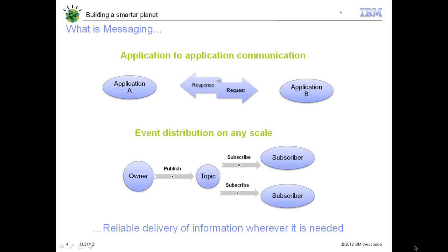We have two programming models in messaging. One is point-to-point, which is a typical example of application-to-application communication via a messaging queue. There is a one-to-one relation between these applications where the sending and receiving application ensures that the message is delivered to a single consumer. From the picture, application A sends a message to the messaging queue, B consumes it, and in return B sends a response back which A receives. This is how point-to-point messaging works, and hence we call it a peer-to-peer messaging model.